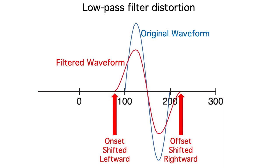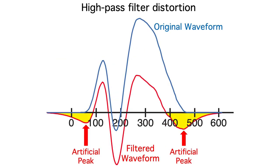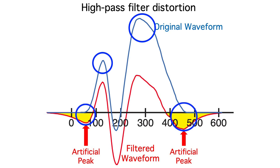Low-pass filters blur the onset and offset times of the ERP waveform. In this example of a 12 Hz low-pass filter, you can see that the onset time is shifted leftward and the offset time is shifted rightward. High-pass filters are even worse. In this example of a 2.5 Hz high-pass filter, you can see that the positive peaks of the original waveform are preceded and followed by artifactual negative peaks in the filtered waveform.